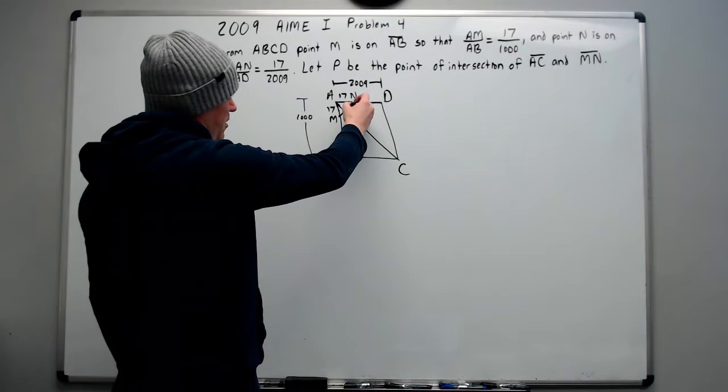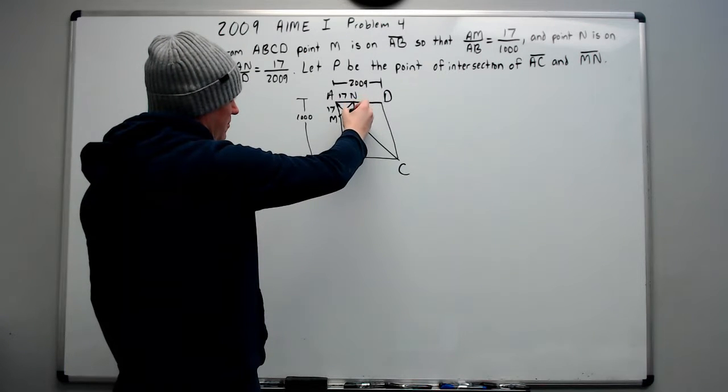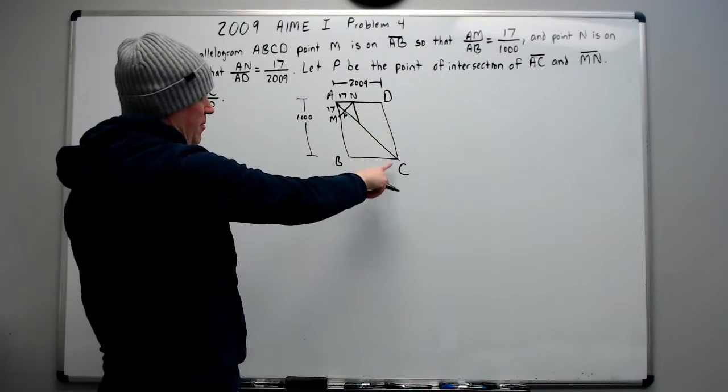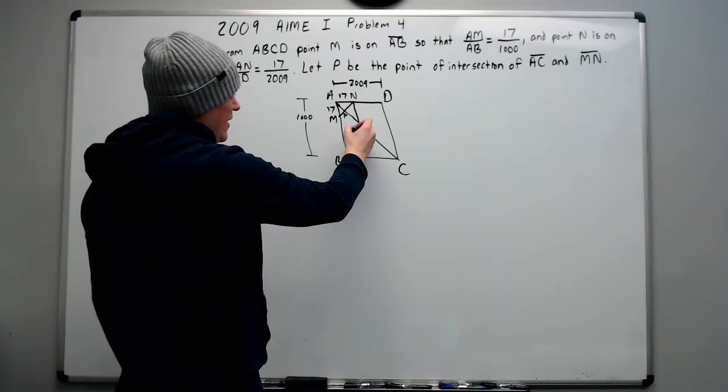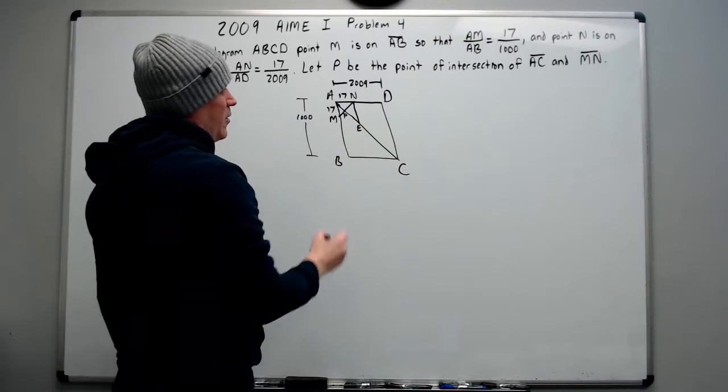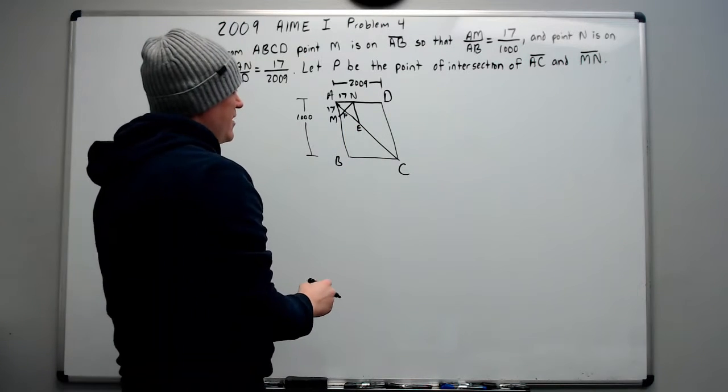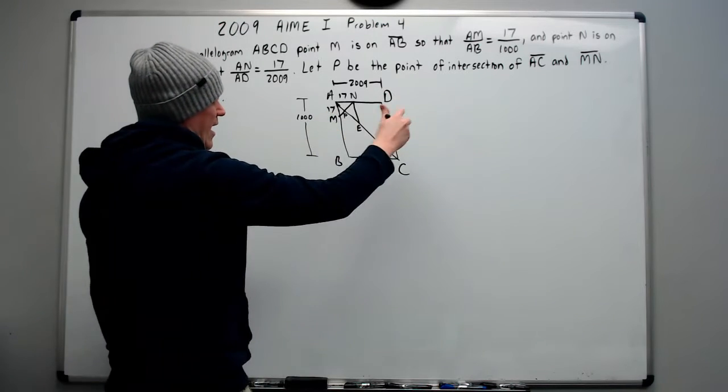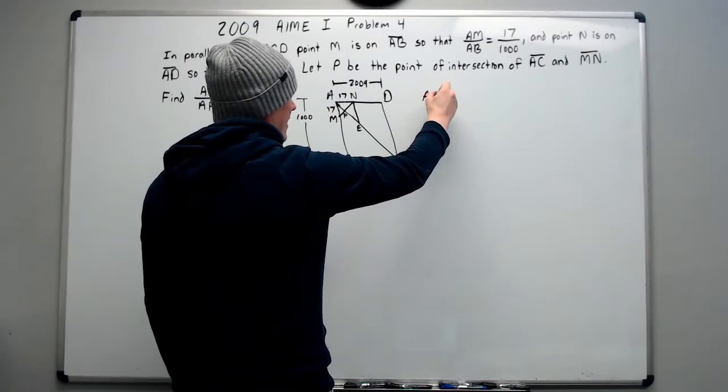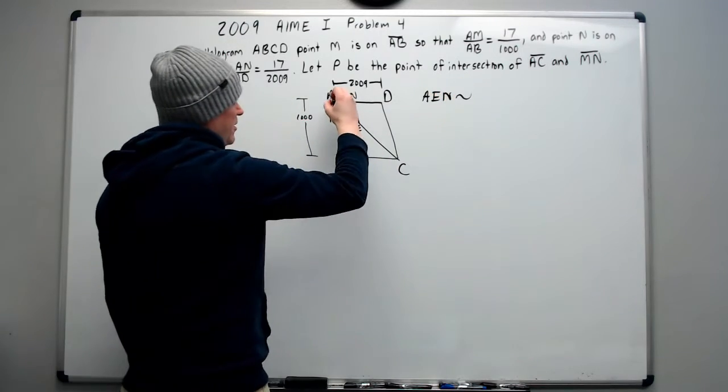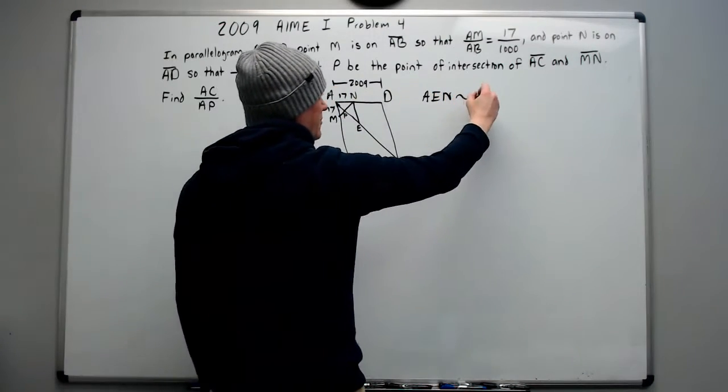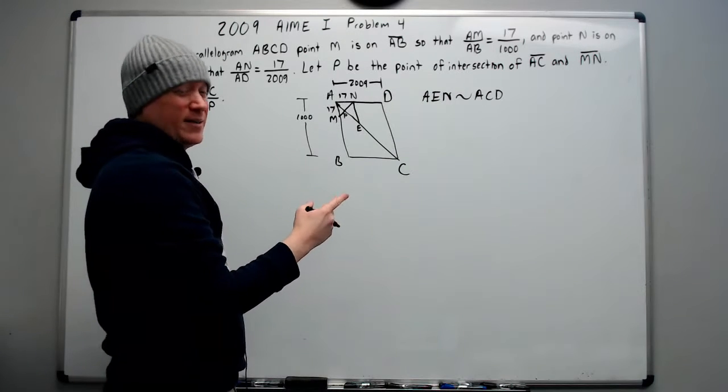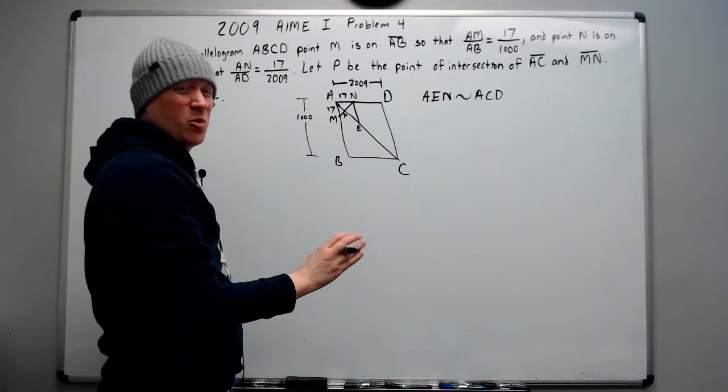And after a little while, you should start to think that maybe we should try to create some sort of similar triangles. For example, if I come from the point N and I come down this way with a line parallel to AM and DC, I can call this point E if I want. And what I've just done is I've created several options for similar triangles. Number one, we're going to have that triangle AEN is similar to ACD.